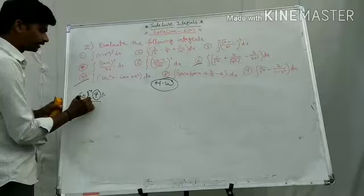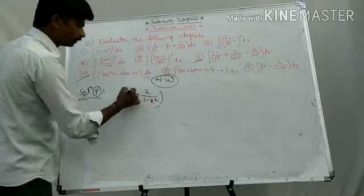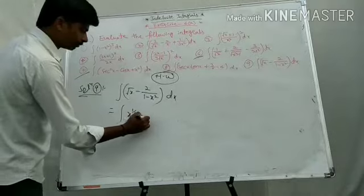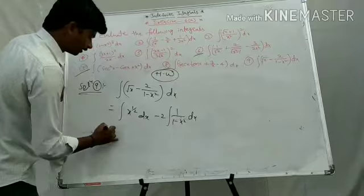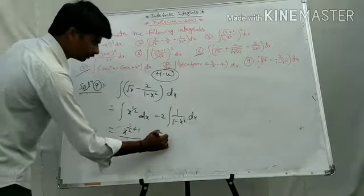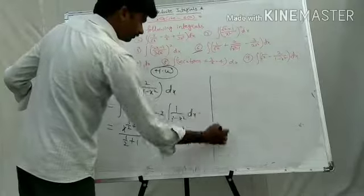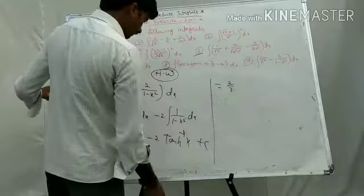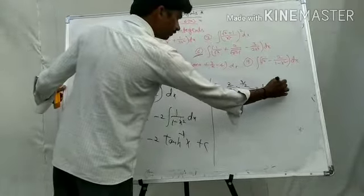Ninth solution: integral of (root x minus 2 by (1 minus x squared)) dx. That equals integral of x to the power 1 by 2 dx minus 2 times integral of 1 by (1 minus x squared) dx. Using the formula: x to the power (1 by 2 plus 1) by (1 by 2 plus 1) minus 2 tanh inverse x. That equals 2 by 3 times x to the power 3 by 2 minus 2 tanh inverse x plus c. This is the ninth solution.